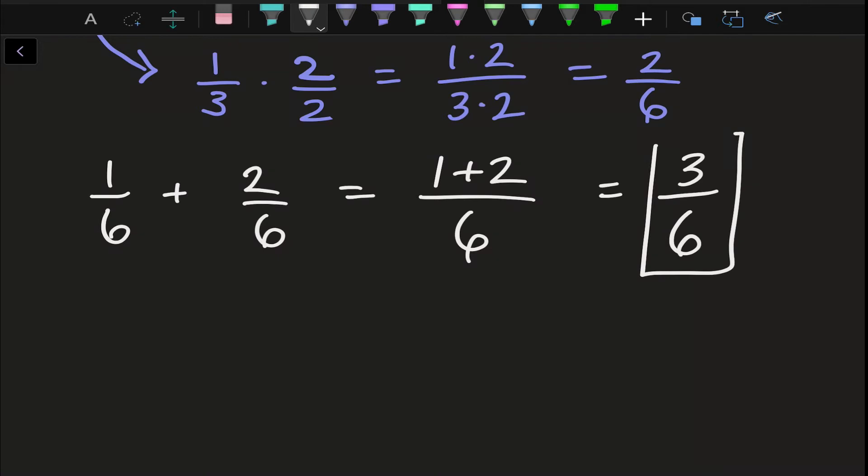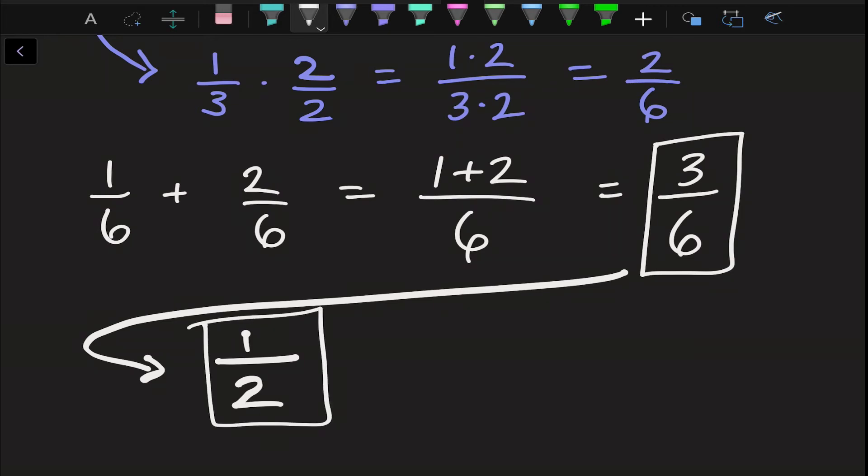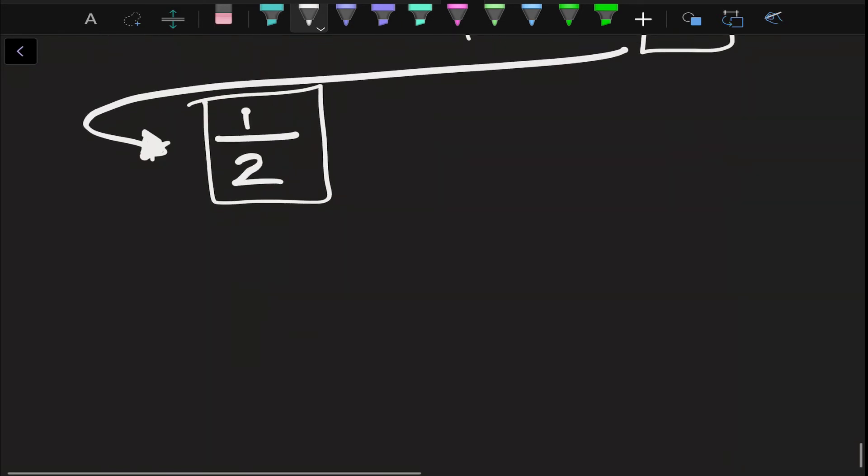Now, if you take a little bit of time to notice on here, this is not in lowest terms. So we can actually use the reduction of fractions we learned about. And we know they can be divided by 3. So our answer for this is actually going to be 1 half. Dividing by 3, not by 2. 1 half is our answer. And we're also combining that with our reduction that we just learned, which is super cool, how it all comes together.